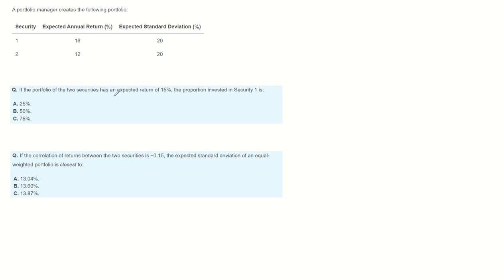Expected return of a portfolio is the weighted average of individual asset returns. So expected return of portfolio equals weight of Security 1 multiplied by return of Security 1, plus weight of Security 2 multiplied by return of Security 2.